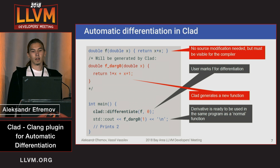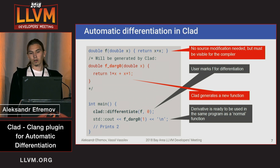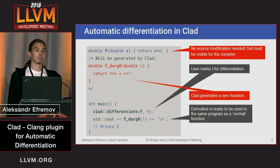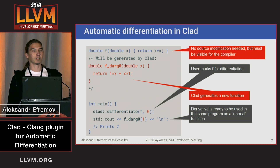How can you use it? You just have some function, you call CladDifferentiate on it, and during compile time our plugin detects it and does all the compile-time processing. Then you get another function defined for you, which you can use as a usual C++ function, or you can copy-paste it to another text file and modify it further — maybe to optimize it for your specific architecture or anything else.